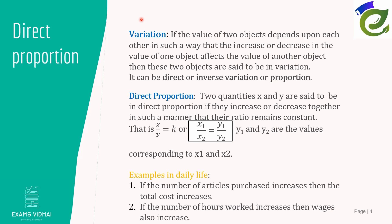You can see many examples of direct proportion in daily life. If you take the speed of any object as constant, increasing the distance to travel will also increase the time taken. Similarly, if the number of articles purchased increases, the total cost also increases. And if the number of hours worked by a person increases, their wages should also increase.